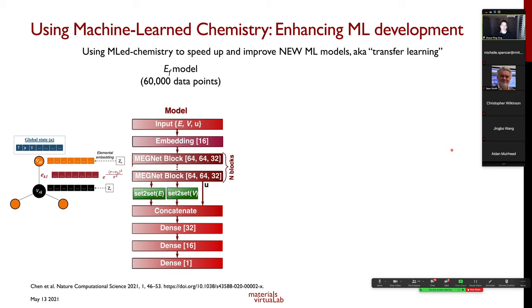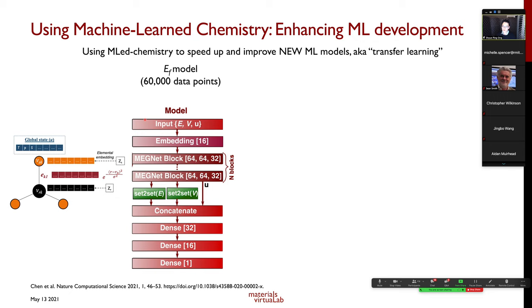One way to use this knowledge is to enhance ML model development through transfer learning. We take our formation energy model, which has the most data points — now over 100,000 — extract the element embedding vector, and transfer it to another model with fewer data points, keeping the rest of the architecture the same but retraining with this embedding as a starting point. We can decrease the band gap model's mean absolute error from about 0.38 eV to about 0.32 eV, and speed up convergence by about 2x.